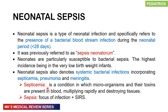When we talk about sepsis, I want us to distinguish between two important terms: septicemia and sepsis. Septicemia is a condition where you have microorganisms together with their toxins present in the blood, actively multiplying and destroying tissues. It's a broad term encompassing bacteremia (bacteria in the blood), viremia (viruses in the blood), parasitemia (parasites in the blood), and fungemia (fungi in the blood).